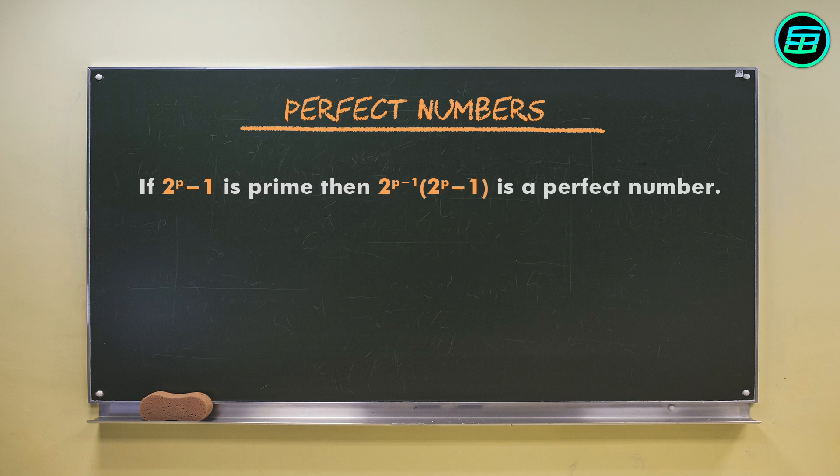In the 17th century, the French mathematician and monk, Marin Mersenne, showed that for 2 to the p minus 1 to be prime, it's necessary that p itself be prime. However, not all prime numbers give a prime result for 2 to the p minus 1. So, finding large perfect numbers still isn't easy.